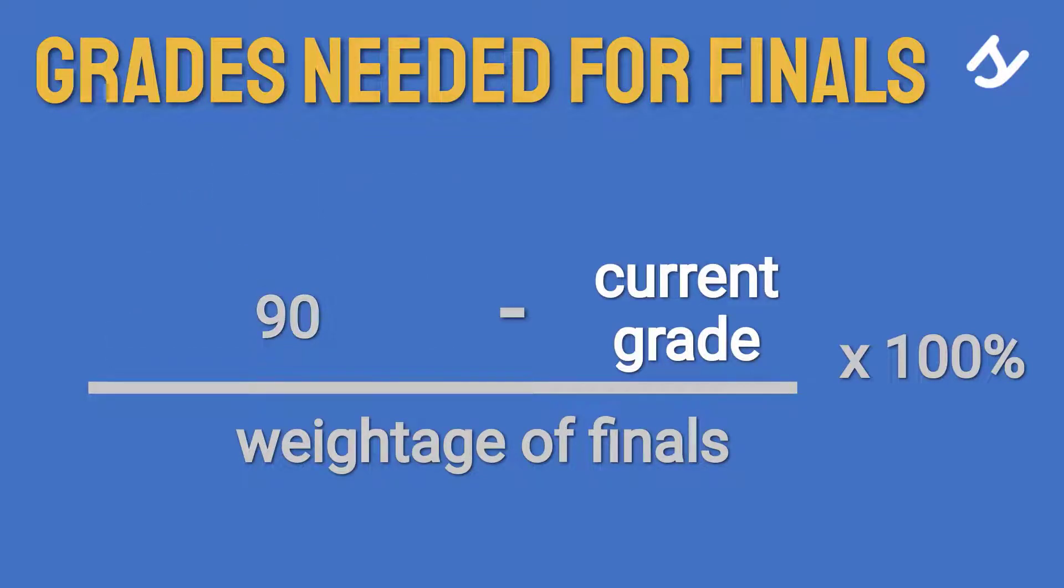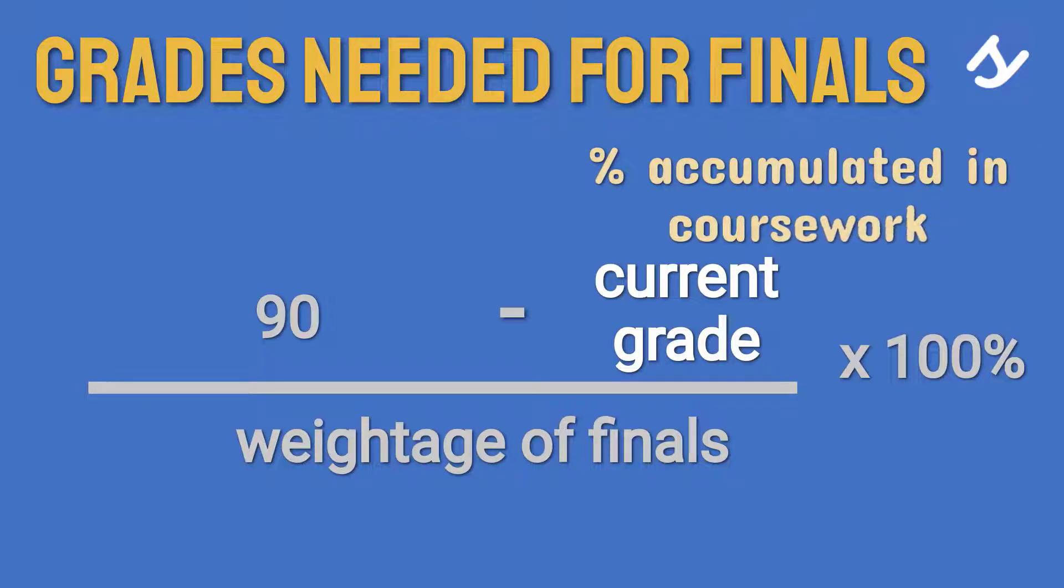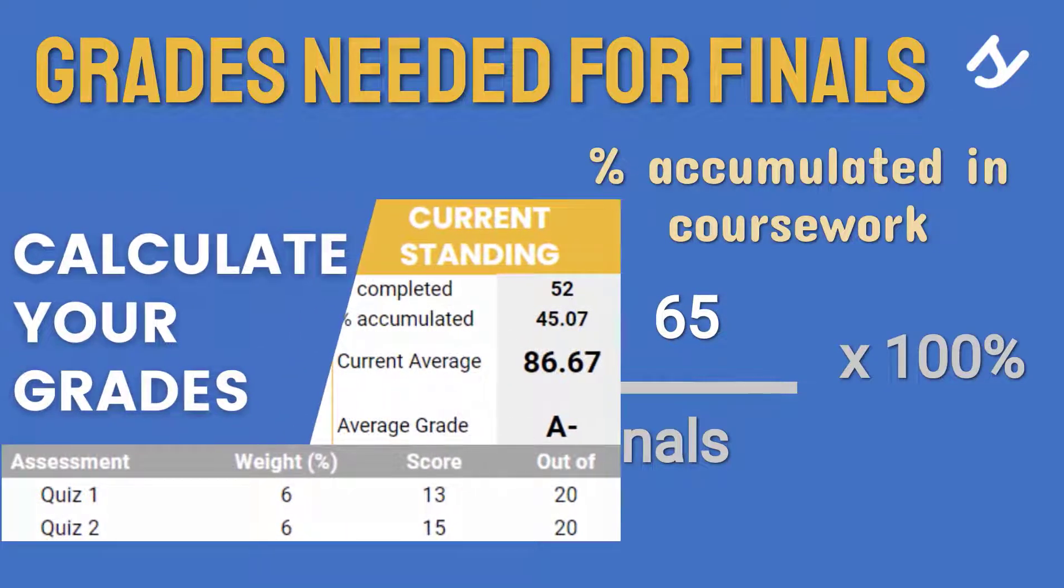The second value is your current grade. That means the percentage you have accumulated so far before the finals. Let's say it's 65. If you don't know how to calculate this, you can check out this video here. Link is in the description.